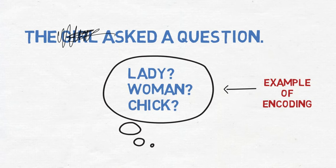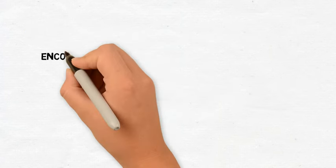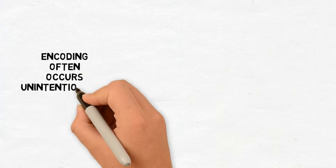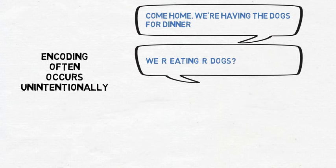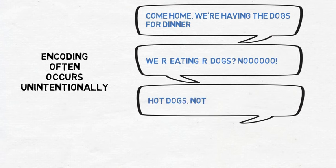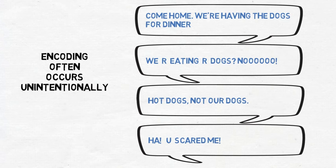However, verbal communication does not only occur when carefully and intentionally considering word choice — it often occurs unintentionally. Have you ever sent off a text too quickly, and in rereading it, found it contained incorrect spellings or words? Have you ever said something in haste that you wish you could have taken back? If so, maybe you didn't encode the message carefully enough and unintentionally sent information you didn't mean to send.